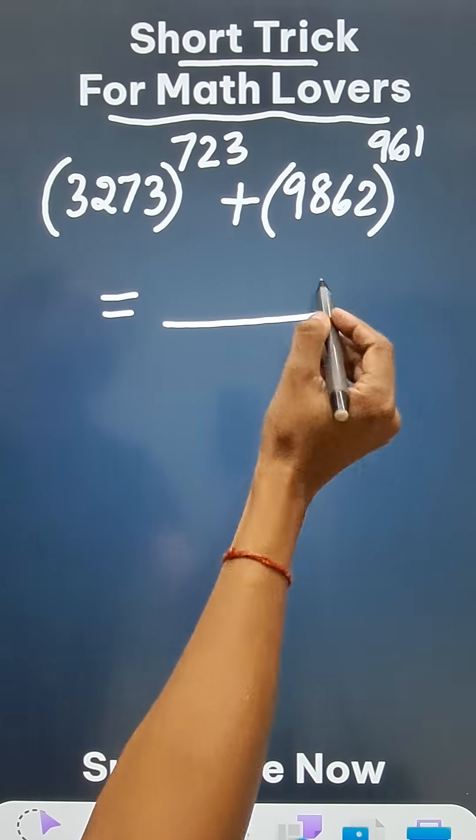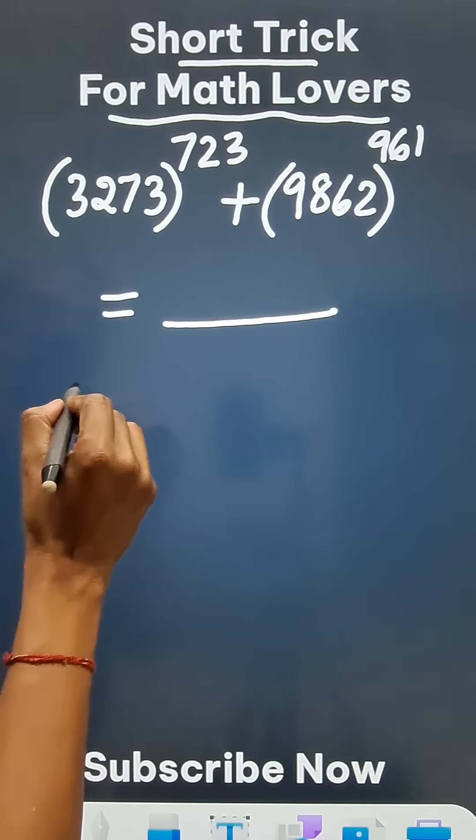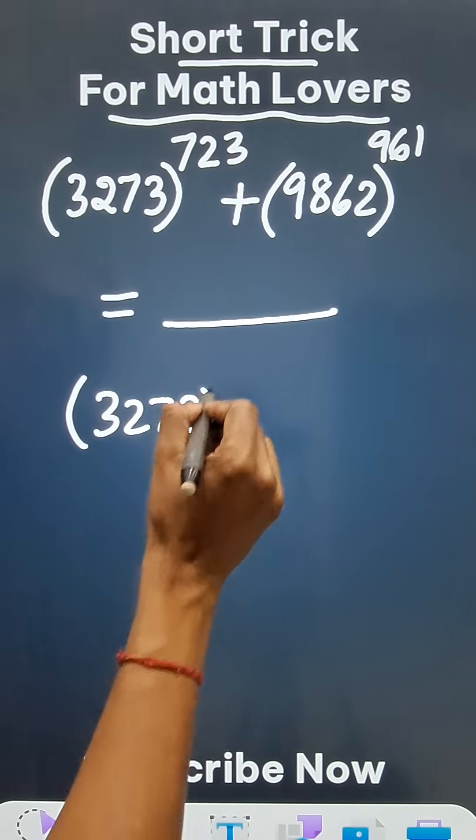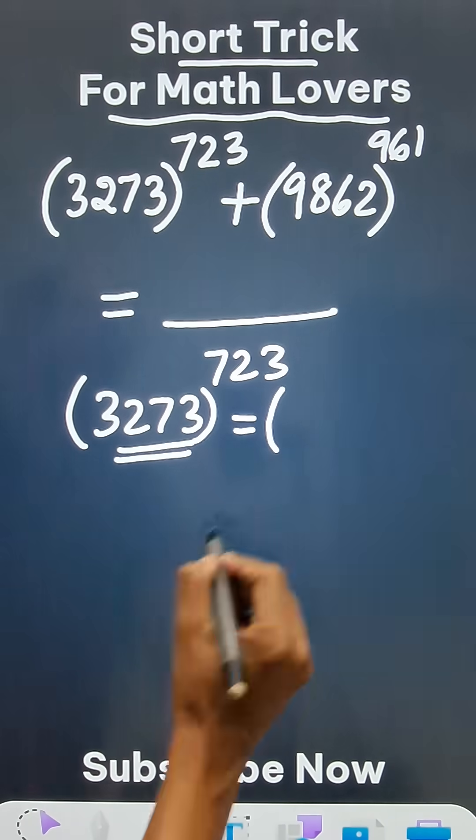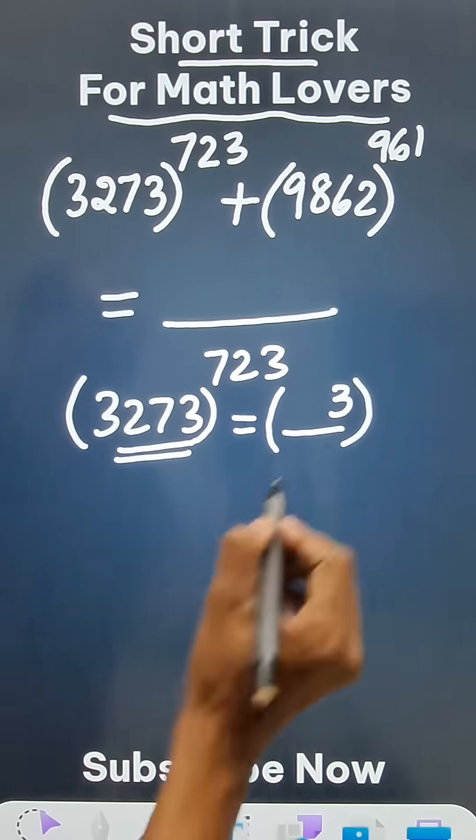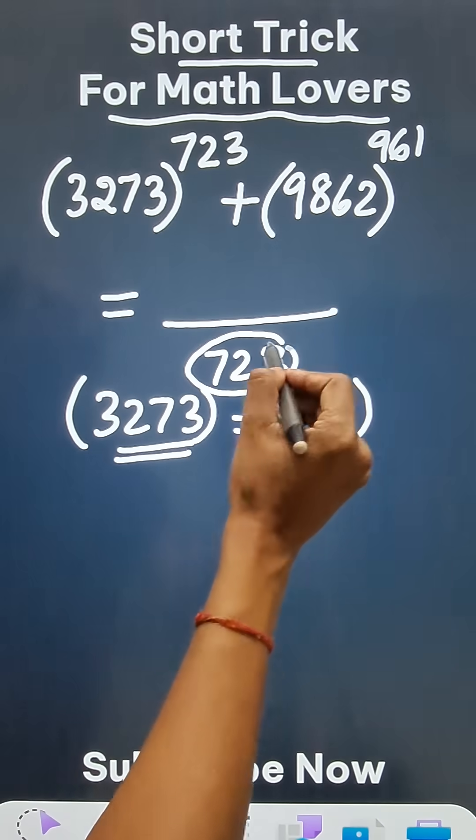And we want to find the unit digit of this particular expression. So to find the unit digit of 3273 raised to power 723, we know that the number ends in 3, so I am just bothered about the last digit 3 and the power 723.